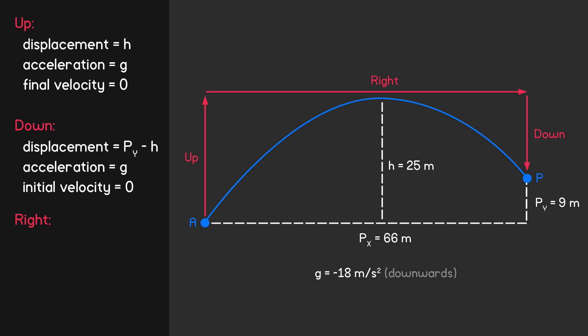For the horizontal motion, we know only that the displacement is given by Px, and that since we're ignoring the effects of air resistance, there is zero acceleration acting horizontally. We need three known values to use the kinematic equations, so we need one more piece of information about the horizontal motion. The key is to realise that the horizontal motion will take the same amount of time as the upwards motion plus the downwards motion. So for the horizontal motion, we can write: time equals time up plus time down.